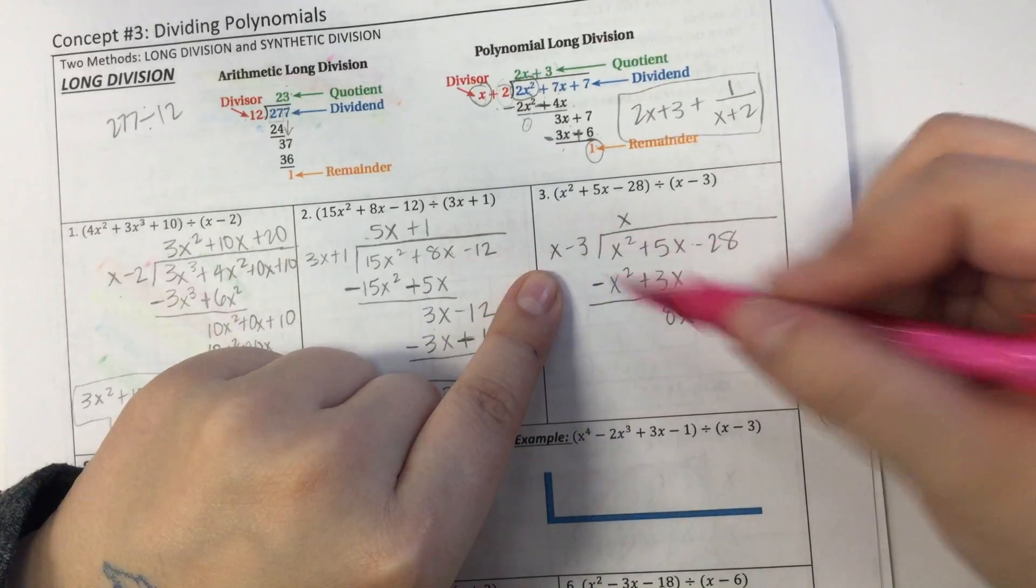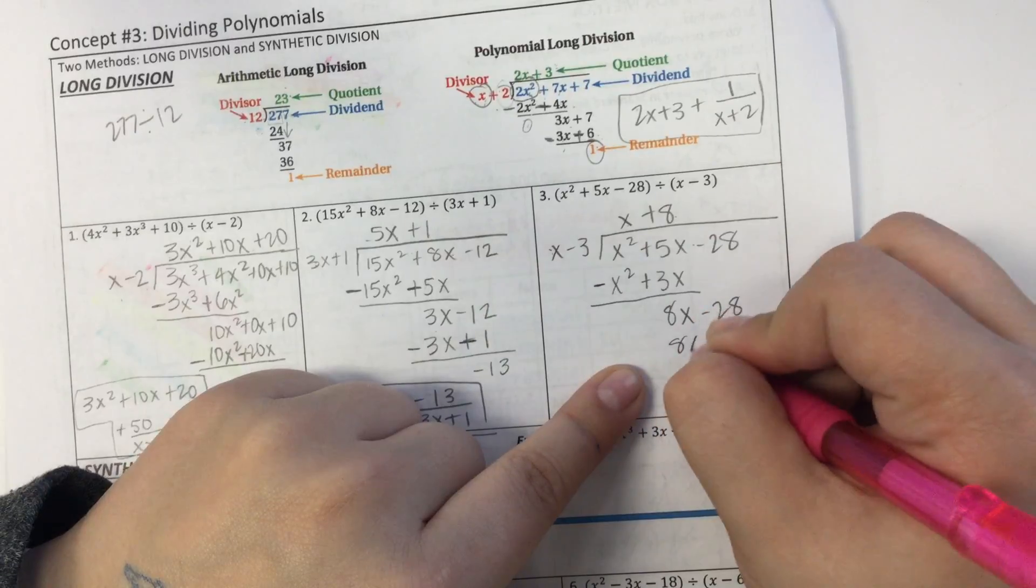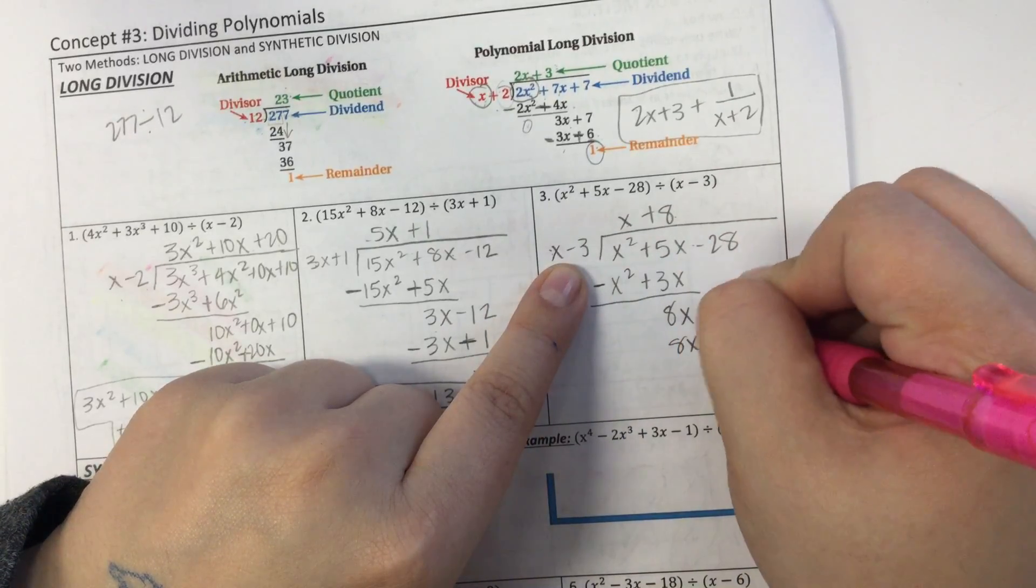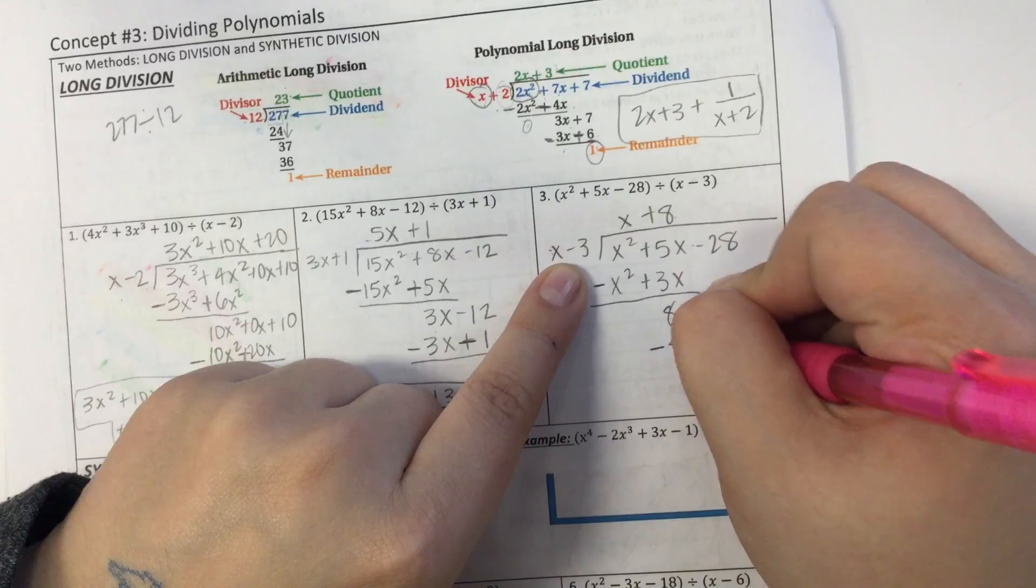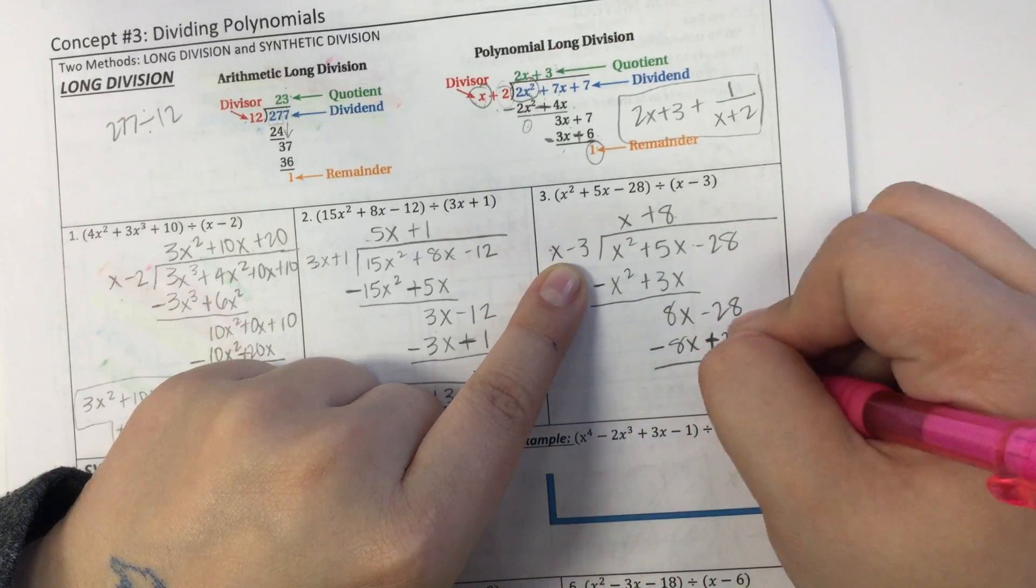And then to get from x to 8x, I multiply it by 8. 8 times x is 8x. 8 times negative 3 is negative 24. And I subtract the whole thing. Negative 28 plus 24 gives me negative 4.